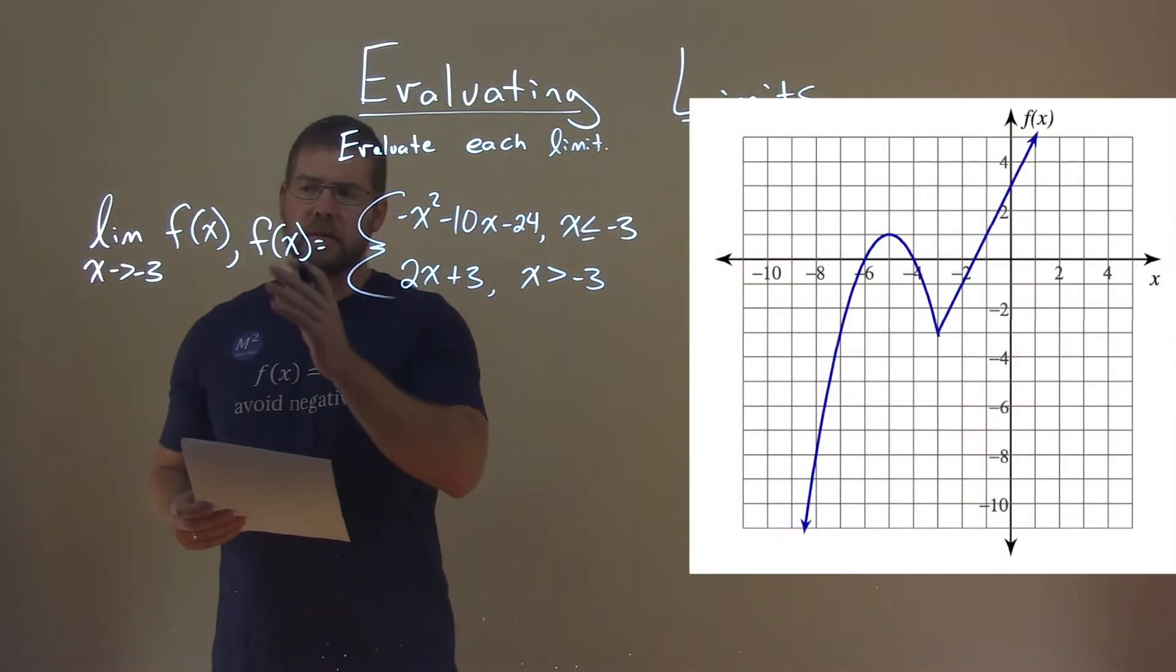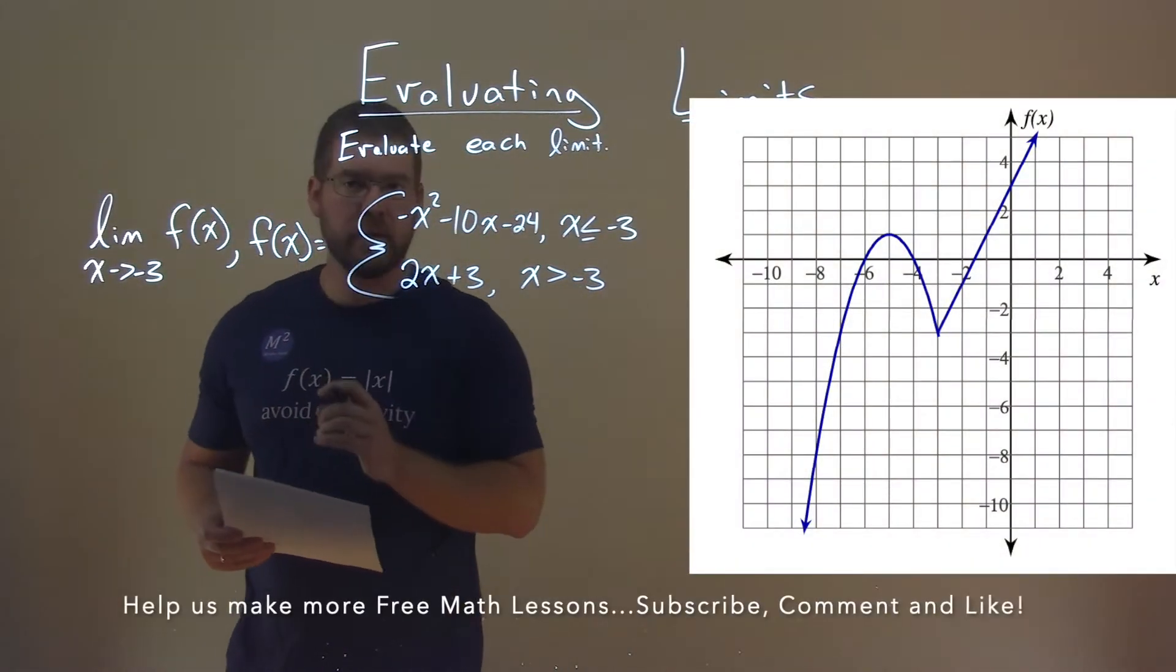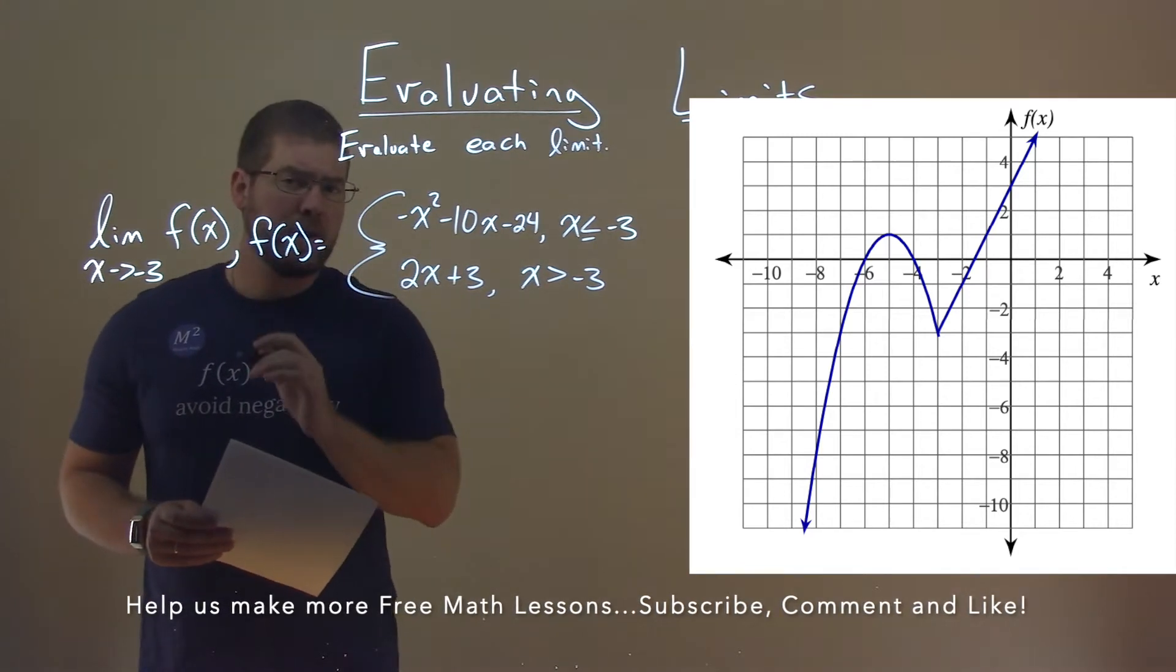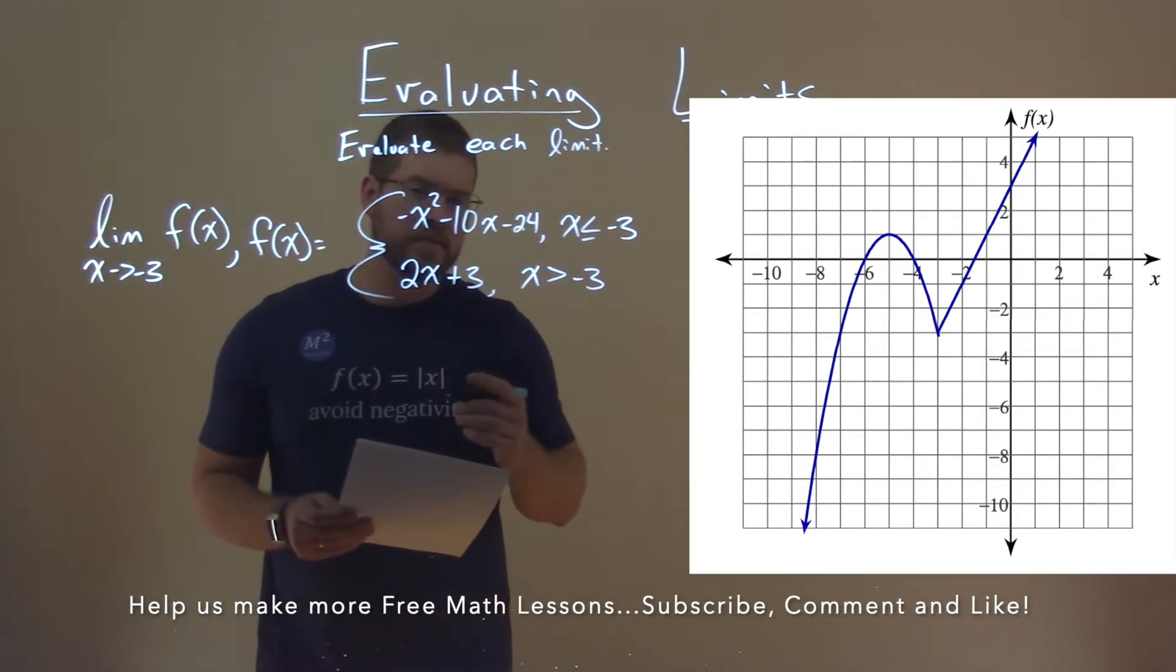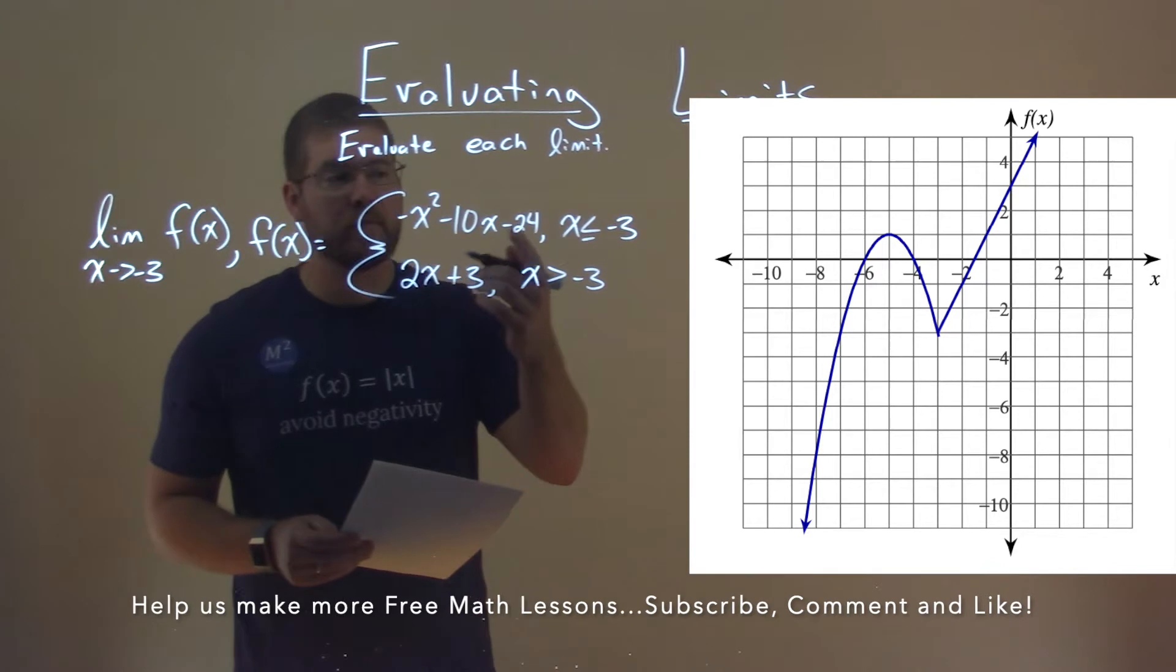We're given this limit right here, the limit as x approaches negative 3 of f(x), where f(x) is equal to the piecewise function, negative x squared minus 10x minus 24,